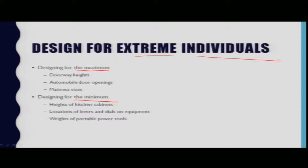If we take an example of doorway heights — in a room there is a doorway — we have to take care of the height of the maximum person that can enter and exit through that particular door. Doorway height is one example in the category of designing for maximum. Other examples include automobile door openings and mattress sizes.